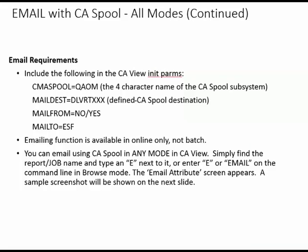Include the following in the CA View init parms. CMA Spool equals the four-character name of the CA Spool subsystem — in our example here, we have QAOM. Mail desk equals the defined CA Spool destination — in our example here, we have DLVR TX XX. Mail from — specify either no or yes. And mail to — we have ESF here in our sample. The emailing function is available in online only, not in batch. You can email using CA Spool in any mode within CA View.